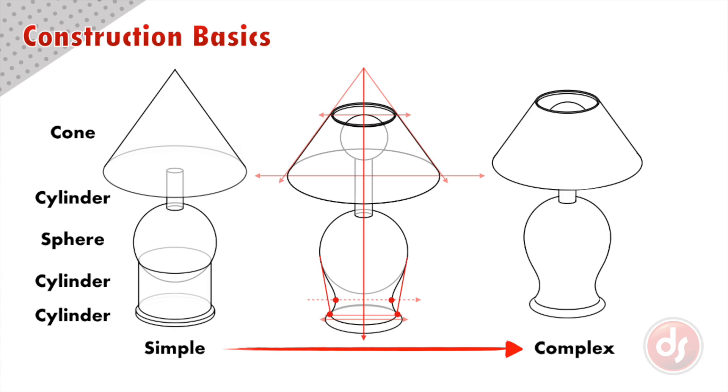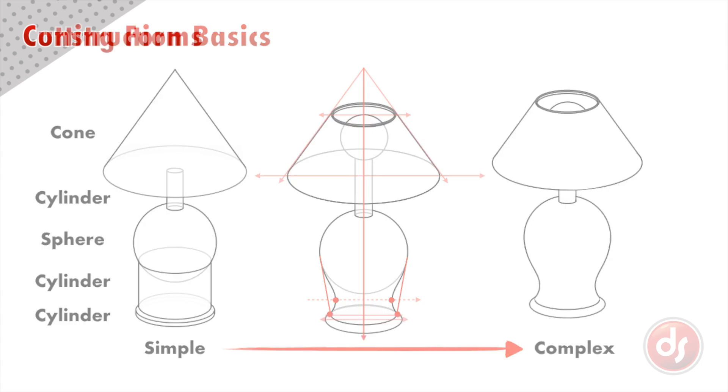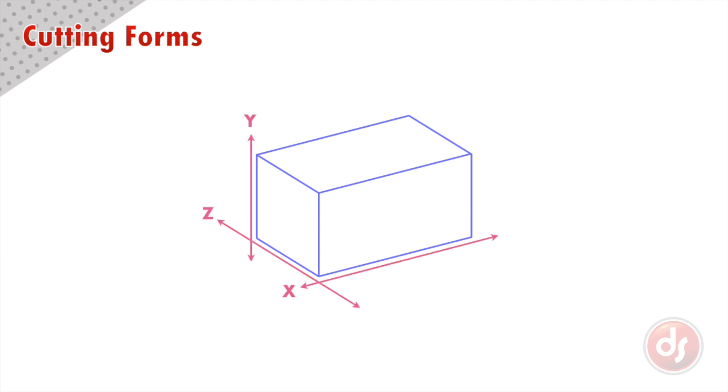Let's use construction to modify these simple forms. One way we can modify these basic forms is by cutting into them. I'll draw a line across the side plane of this block using isometric perspective, then connect these corner points to the back corner of the block. By removing the top section we've created a wedge form.